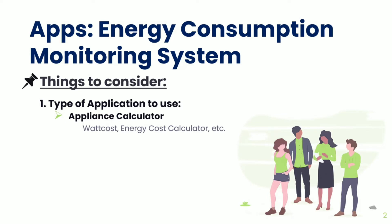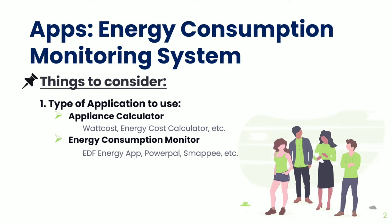The next type of application is the energy consumption monitor. Some apps can give you real-time information on the amount of energy you have consumed within a certain time period. These apps may include your electric bill, energy consumption history, and energy saving tips. Some examples of these apps are EDF Energy App,